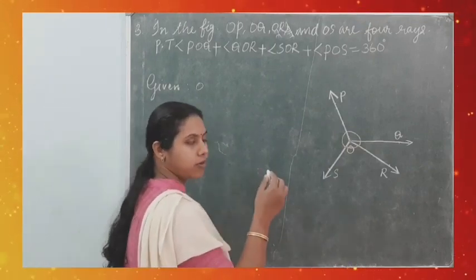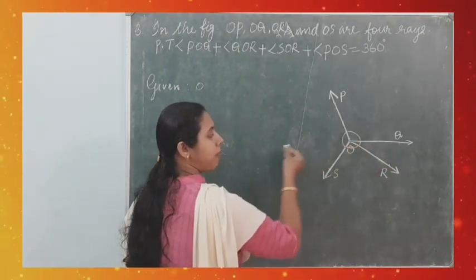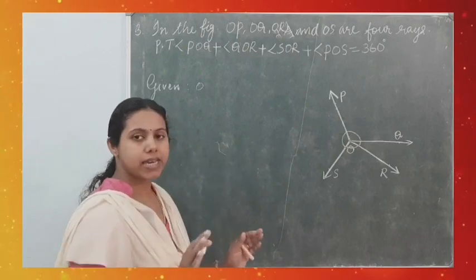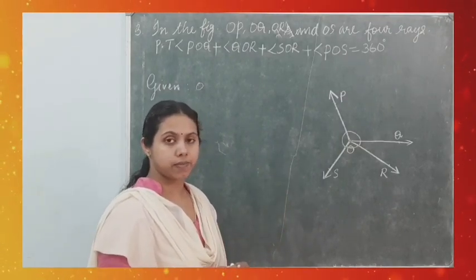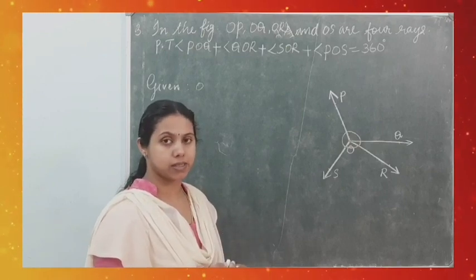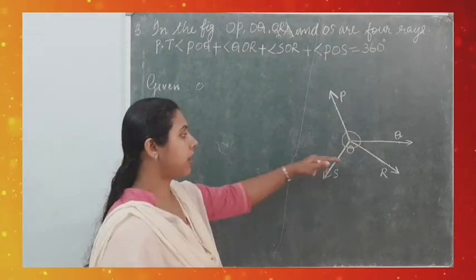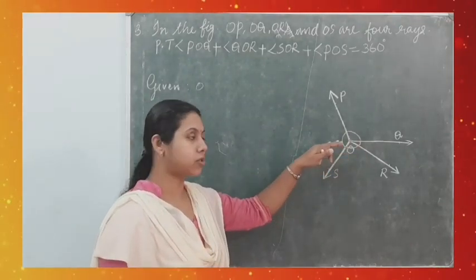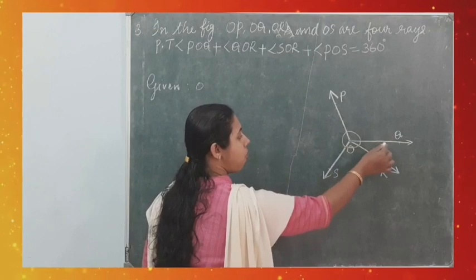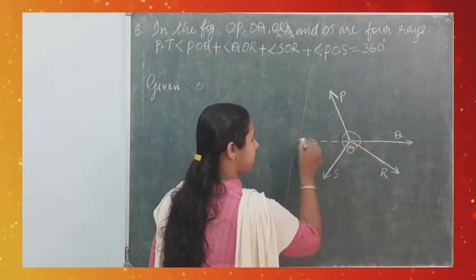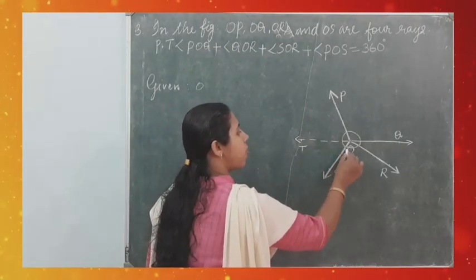To prove this, first consider — there is no complete line visible here. If there were a line, we could directly apply the linear pair axiom. So to construct a useful line, we produce ray OQ backwards to a point T. Then TOQ is a straight line.